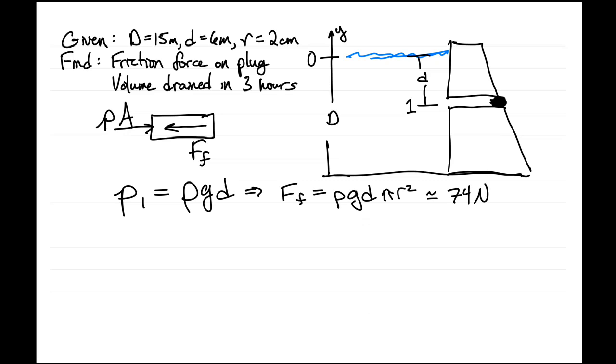For that we need Bernoulli's equation. And we'll look at the difference between p0 and p1, so we have our point 0 and point 1. We have p0 plus one half rho v0 squared plus rho g y0 equals p1 plus one half rho v1 squared plus rho g y1.